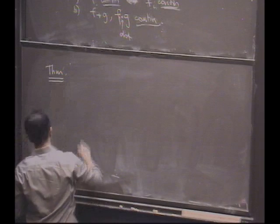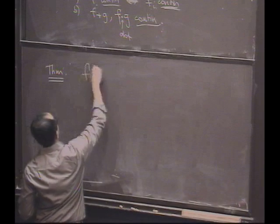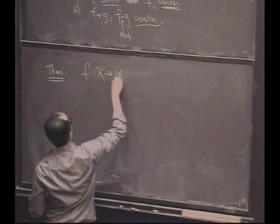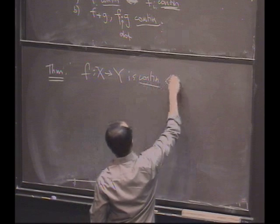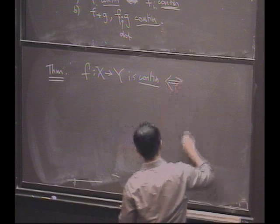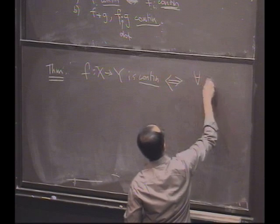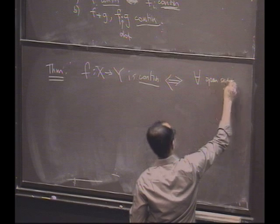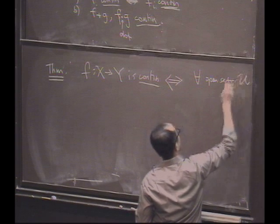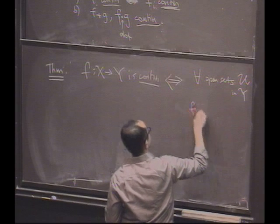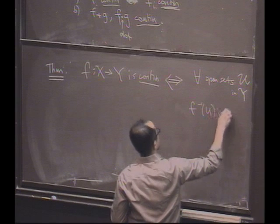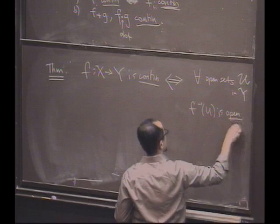Very, very surprising. I claim that f from X to Y is continuous if and only if for all open sets U in Y, f inverse of U is open in X.